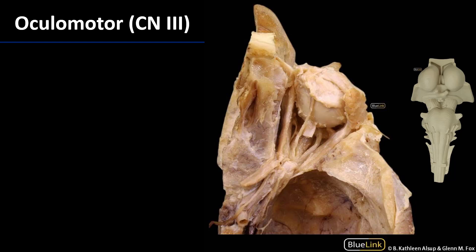The oculomotor nerve is here on the brainstem. We can see the oculomotor nerve — this portion is the inferior division of the oculomotor nerve — and there are other branches visible just along there.